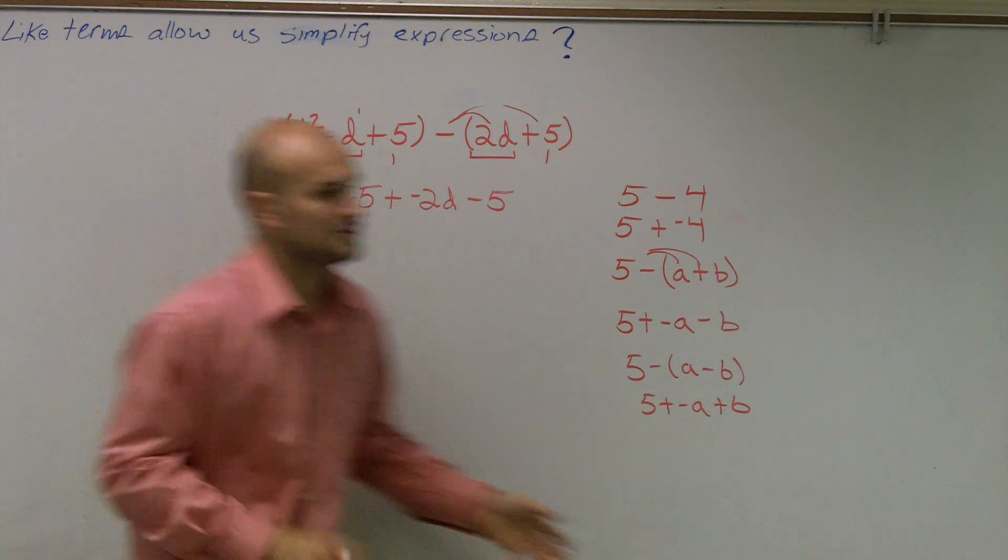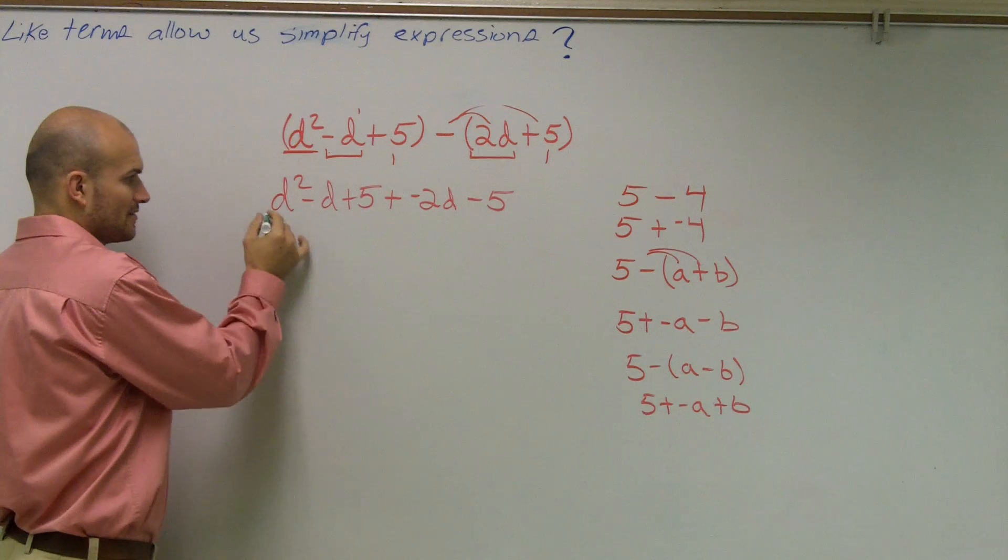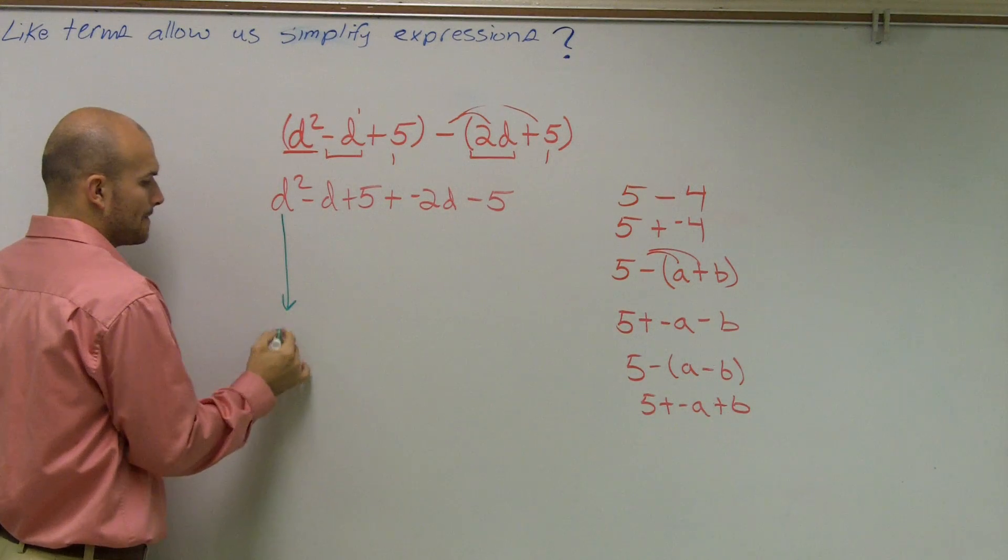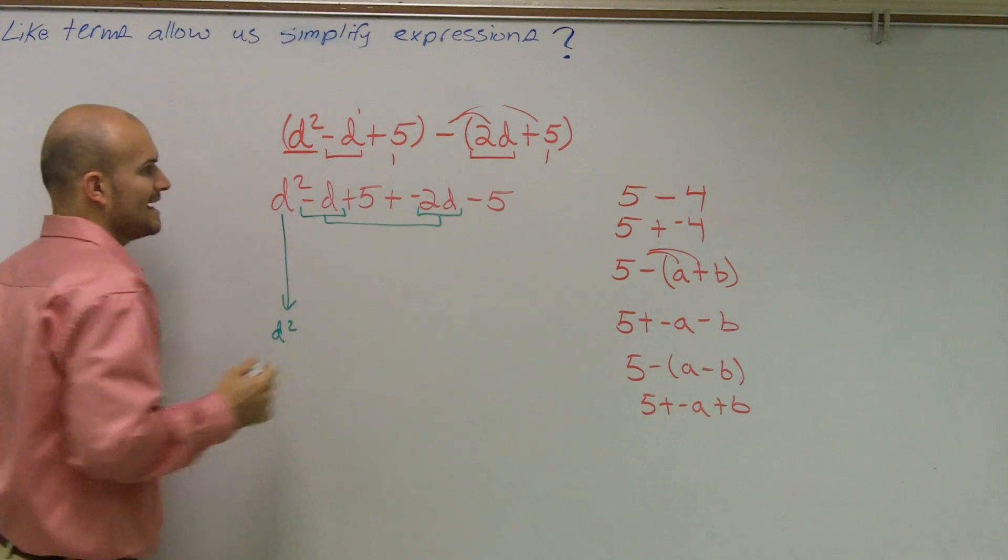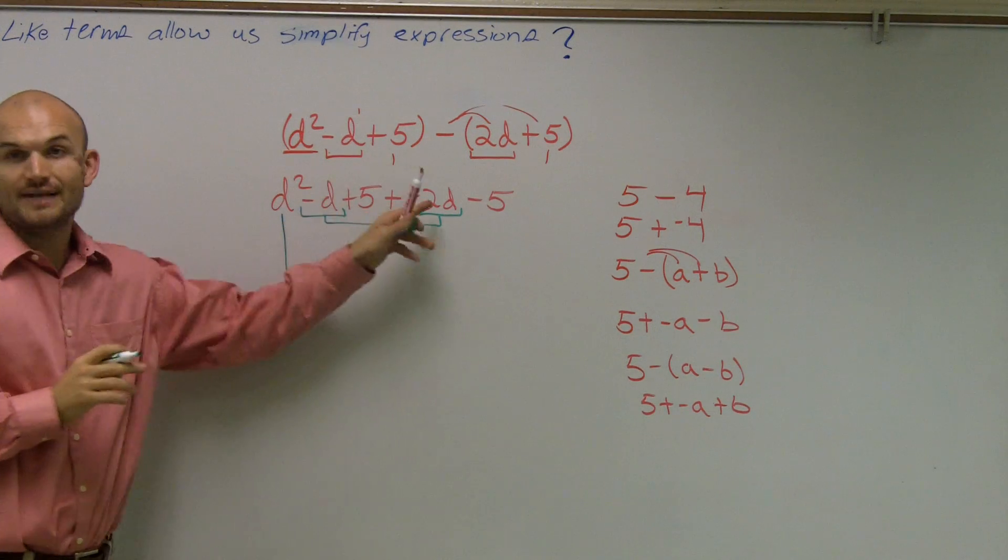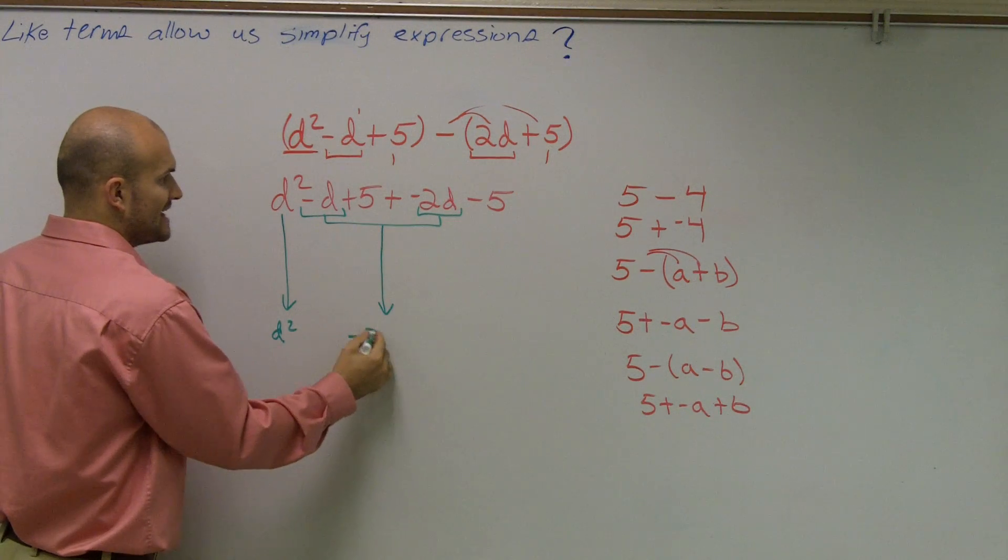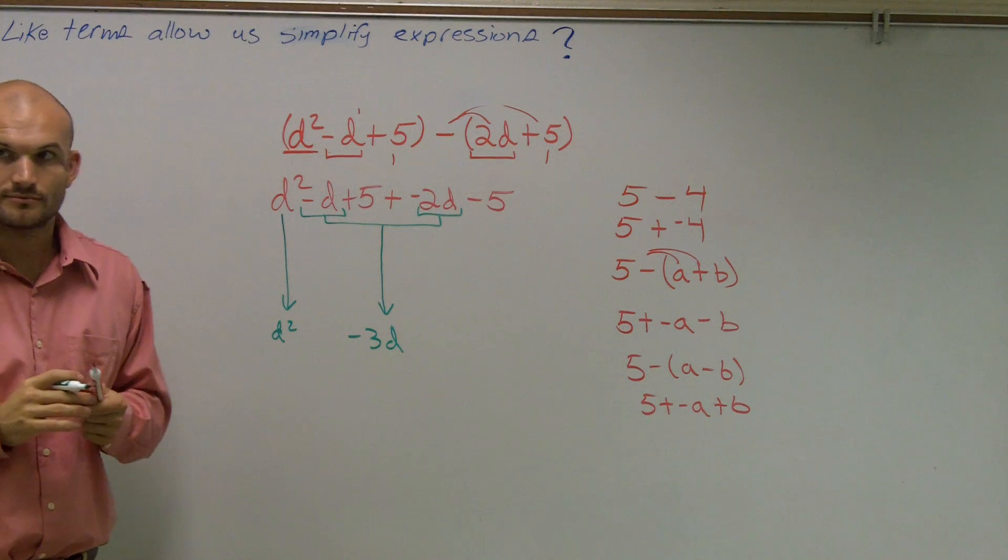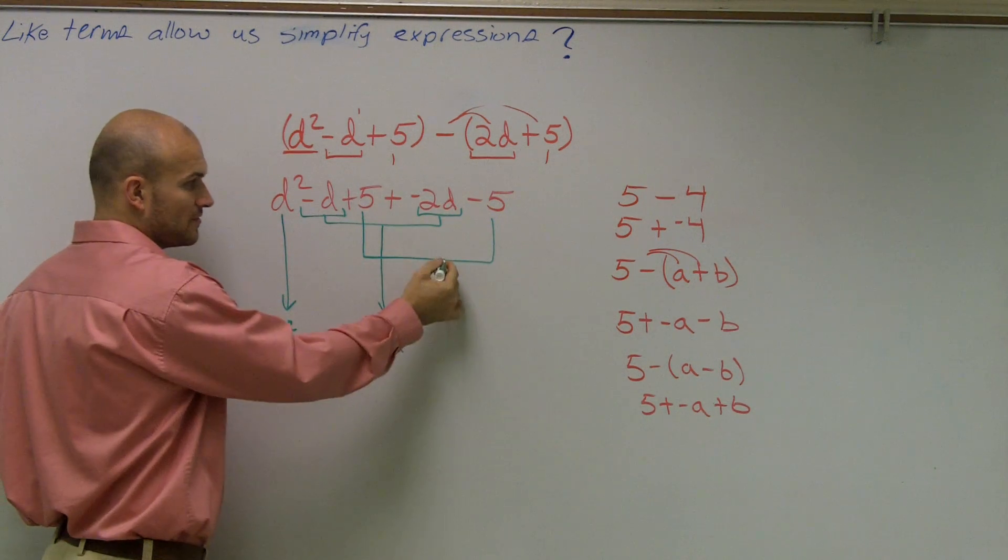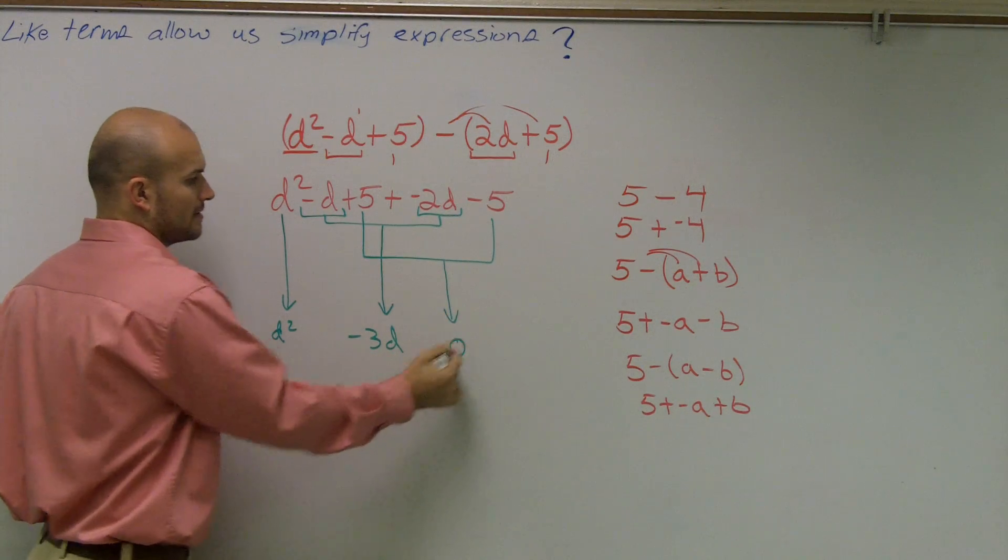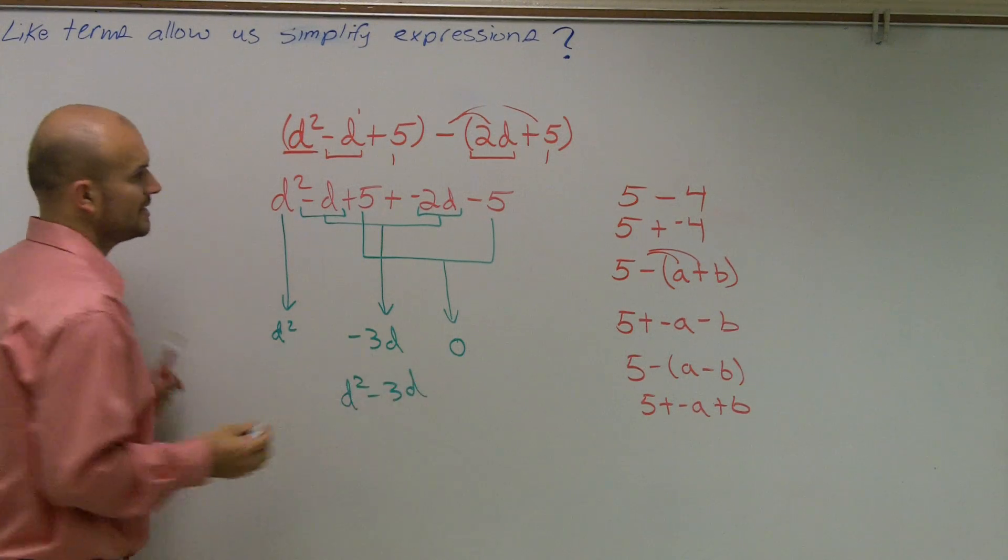Then the next thing I'm going to do is combine my like terms. So my d squared I don't have anything with, right? So I'm just going to bring that down. However, I have a negative d here with a negative 2d now. So negative d minus 2d is going to give me negative 3d. Then lastly, I have 5 minus 5, which gives me 0. So my final simplified answer is just going to be d squared minus 3d.